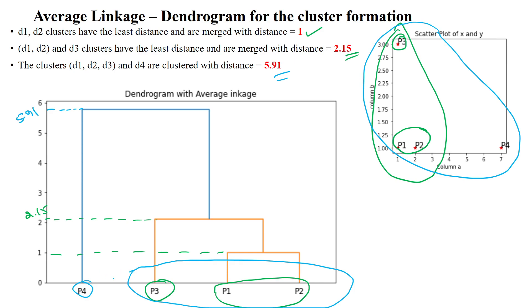This is the way to use the average linkage method to form hierarchical clustering using the agglomerative hierarchical clustering method. Thanks for watching.